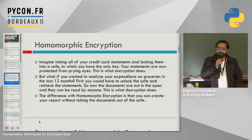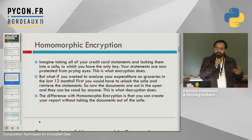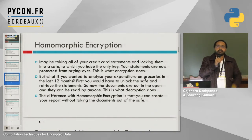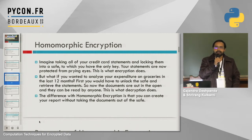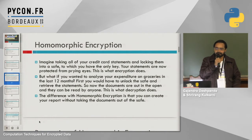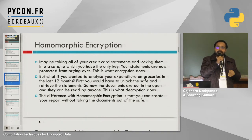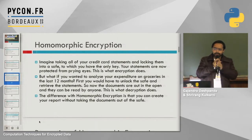Similarly, imagine you have a credit card statement. You have taken a print of it and stored it in a safe locker, and you have the only key. Your statements are protected — nobody can access it. This is what encryption does. But if you want to analyze your expenditure for the last 12 months, you need to unlock the safe, take out the statements, and analyze them. That is what decryption does. The problem is that when you want to analyze it, the data becomes available to the public. In homomorphic encryption, we analyze the data while it remains encrypted — we perform the analysis on the encrypted data, not the plaintext. Since we are performing analysis on encrypted data, nobody knows what that data is. That's the security aspect of it.